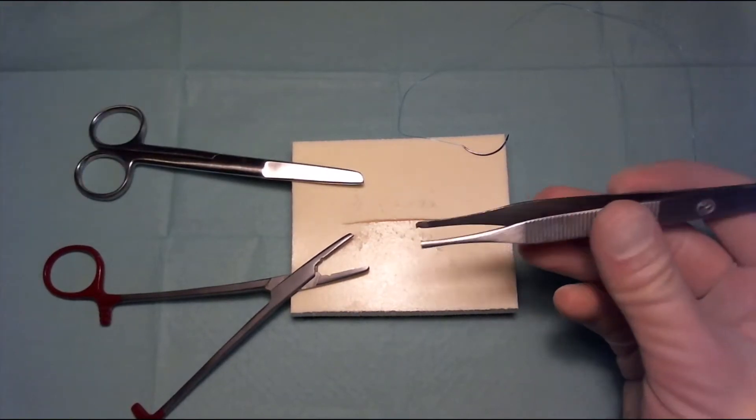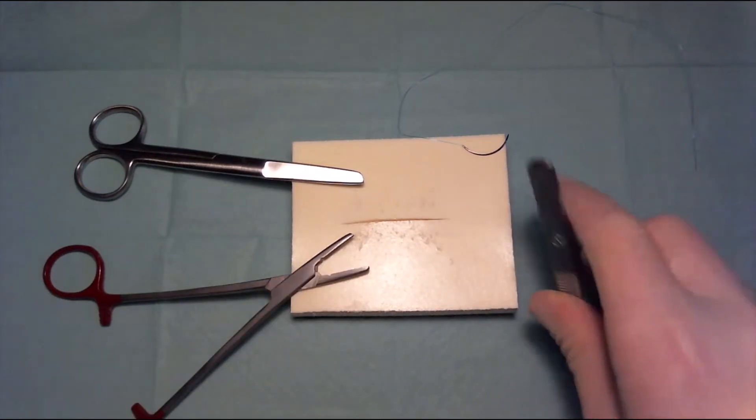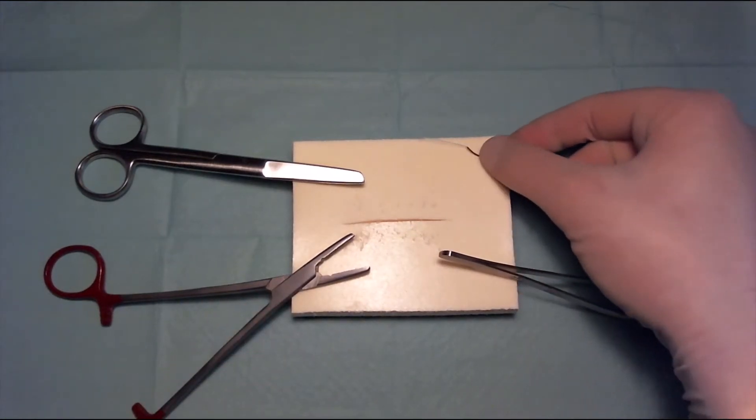Next we're going to need a forceps, a surgical forceps which is the one with the teeth over here, and finally we are going to need our suture.